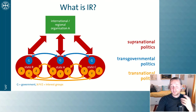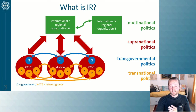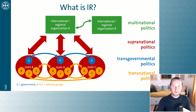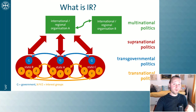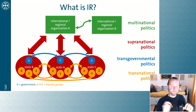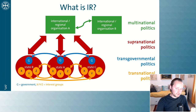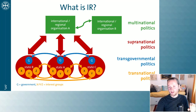Then of course we have a fourth possible level: there could be several international or regional organizations that interact with each other, and that is something we call multinational politics. For example, the European Union is a member of the United Nations — there is an EU representative sitting in New York at the UN, and sometimes the EU representative is the only one talking with other countries in negotiations, with individual EU member states not even turning up. So we have four levels — multinational, supranational, transgovernmental, and transnational politics — and all of that makes up what we call IR. This comes from Joseph Nye and Lota Brock.